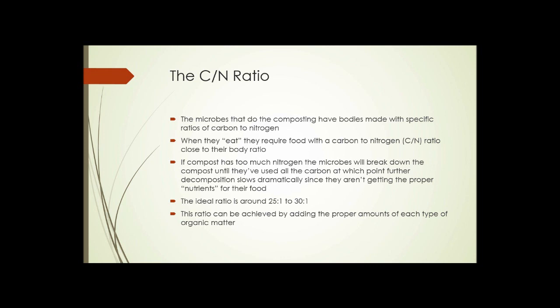So bacteria contains so much carbon and so much nitrogen, and all of the bacteria of that species has the same ratio of carbon and nitrogen in the cell. So when they eat or start decomposing the organic matter, they require food that has a carbon to nitrogen ratio that's close to the ratio in their body.